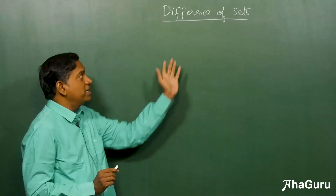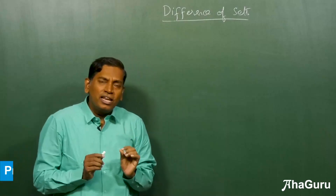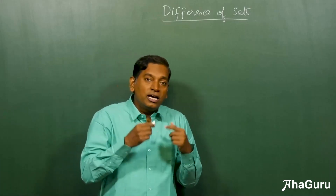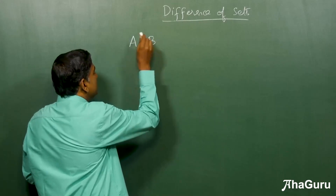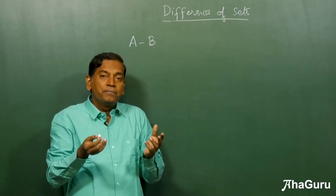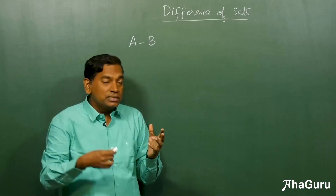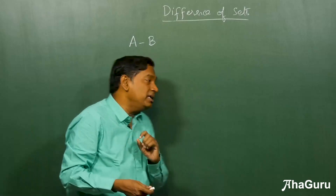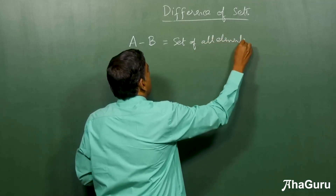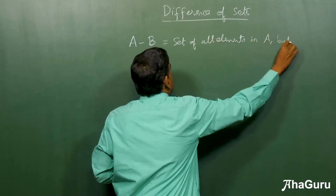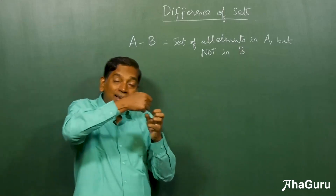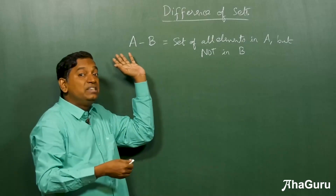Here we are going to see a new operation called difference of sets. We know about difference of numbers, like 5 minus 3. Now we are going to learn an operation which is like a minus b for sets. Just like we remove something in numbers, a minus b when you have sets A and B is defined as the set of all elements in A but not in B. That means you take the elements in A and remove the elements in B, which is why it's called difference.